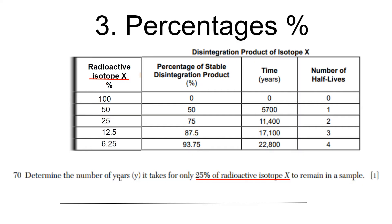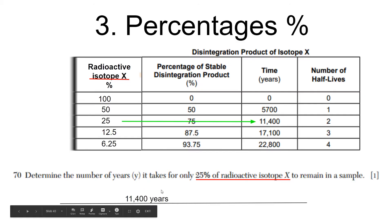When determining the number of years it takes for only 25% of the radioactive isotope to remain, you'd find radioactive isotope at 25%, read across to the time in years — and that's 11,400 years.